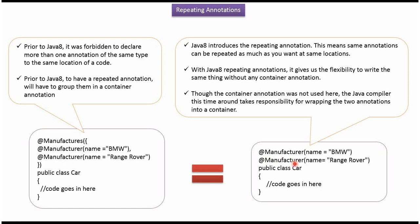Repeating annotation was introduced in Java 8. Before Java 8, if you wanted to create repeated annotations, you had to put the repeated annotation inside a container. Here the repeated annotation is Manufacturer and the container is Manufacturers.